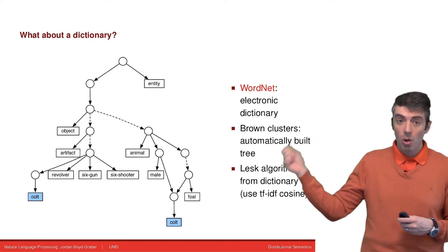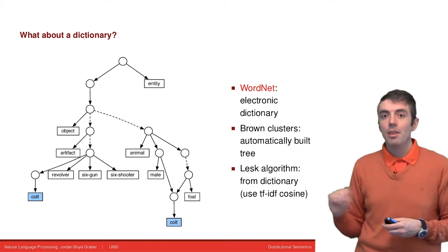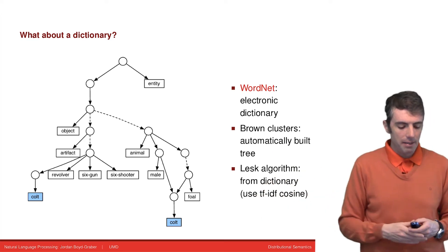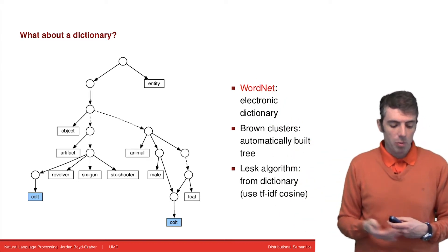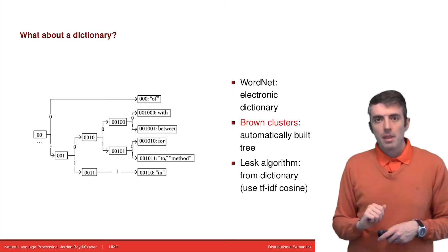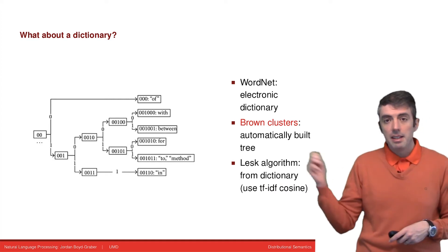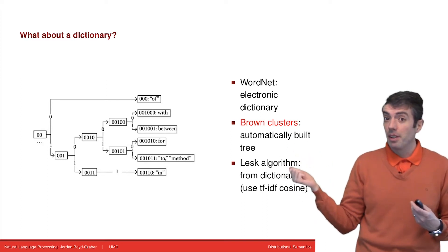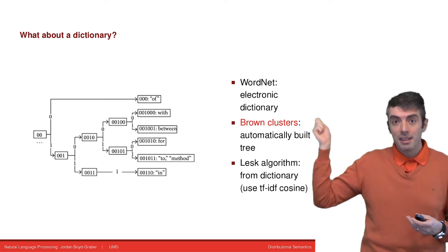WordNet represents the meaning of a word as a path through a directed acyclic graph. For example, here you have the word colt, which can either mean a young horse or a kind of weapon. Those two meanings are represented as different paths in this directed acyclic graph. You can use the path through this tree as a way of representing a word's meaning. You can also build trees like this automatically. Brown clusters are a way of doing this, where you basically build a binary string based on how similar the words are, how similar their contexts are, and build a tree like that. Then you can represent word similarity based on bit signatures of the words.